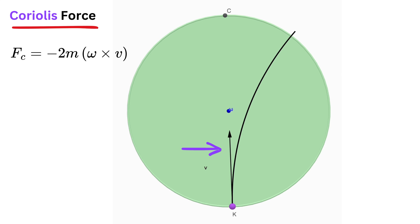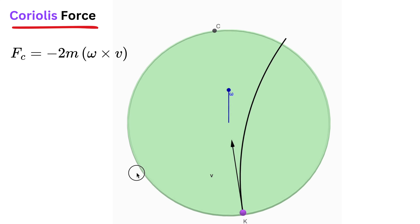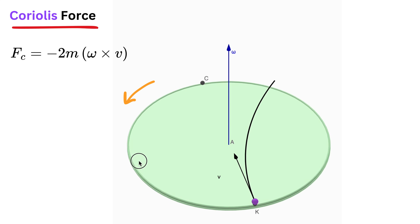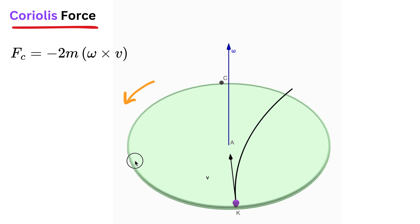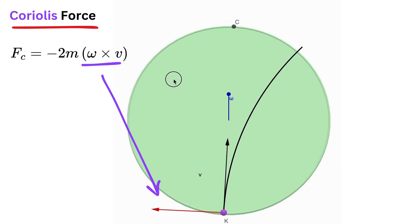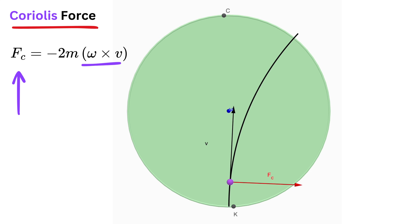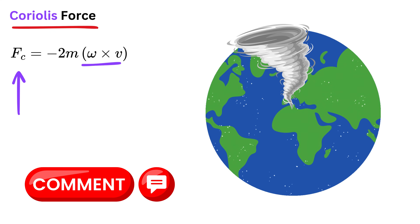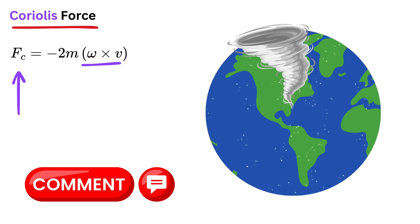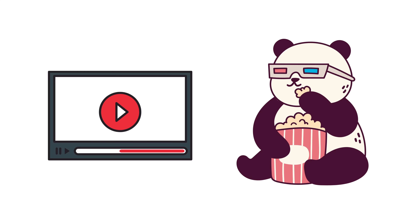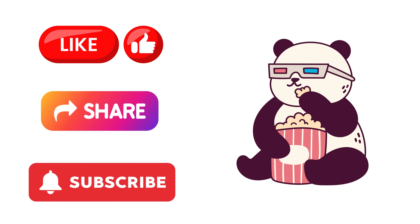If you throw the ball in the positive y direction — so v is in the +y direction — and the platform rotates counterclockwise, then by the right-hand rule ω points in the +z direction. So ω × v points in the −x direction, and the Coriolis force direction is in the +x direction. This means the ball will appear to deflect toward the right side of its path in the rotating frame. Can you share any other real-life examples of the Coriolis force in the comments? If you enjoyed this video, please like, share, and subscribe to our channel.